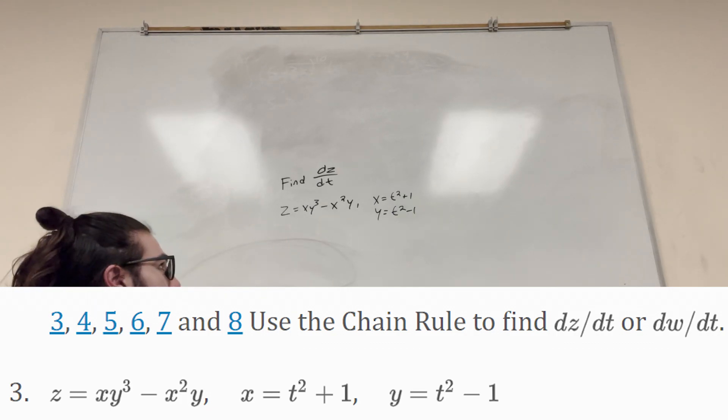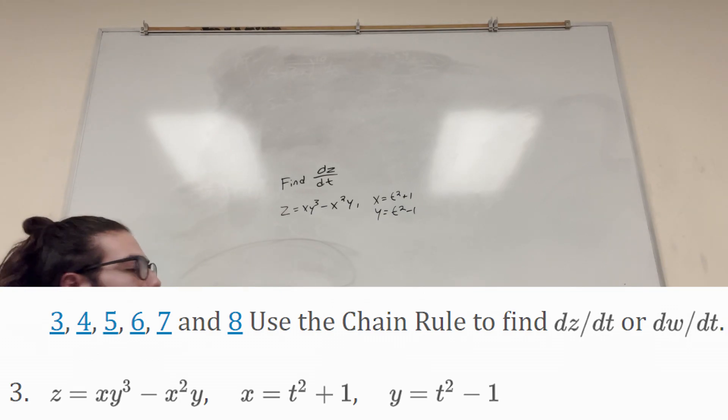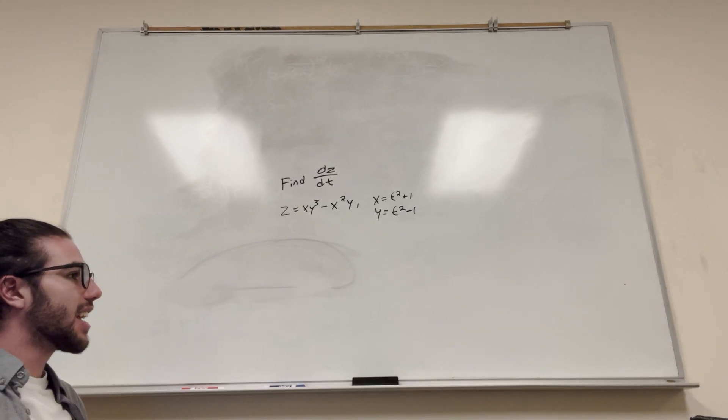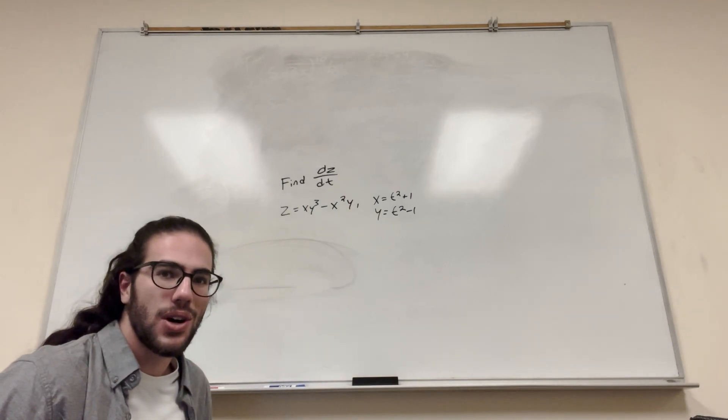What's up, Cal gang? Alright, we're getting some chain rule problems here. So it wants us to find the derivative of z with respect to t. So it gives us a function z is equal to x and y, and then it shows you that x is equal to t plus 1, and y is equal to t squared minus 1.